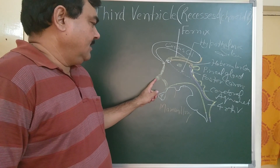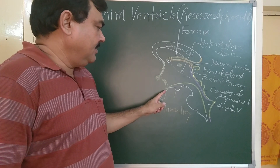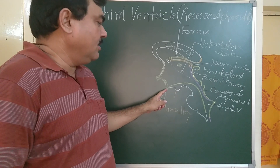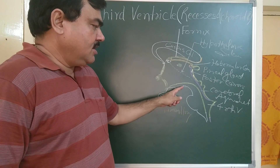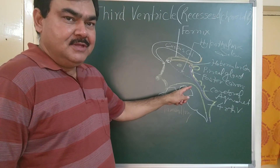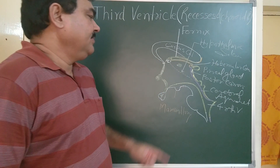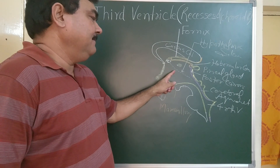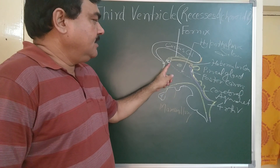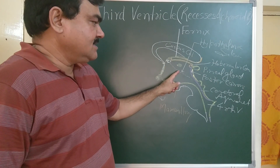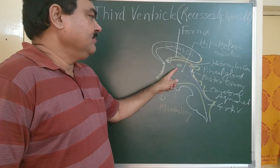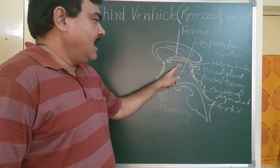The floor is formed by the optic chiasma, tuber cinereum, the pituitary stalk or infundibulum, mammillary body, posterior perforated substance, and the tegmentum of the midbrain. The lateral wall is divided into parts by the hypothalamic sulcus — the upper part is the thalamus and the lower part is the hypothalamus.